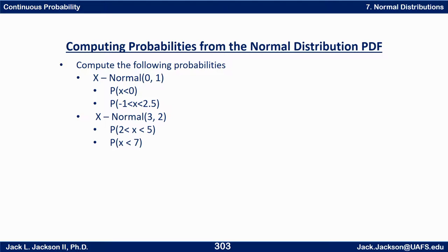What's the probability that X is less than zero? That one you don't need a calculator for. What about the probability that X is between negative 1 and 2.5? And then what about X being normal with mean 3 and standard deviation 2 — what's the probability that X is between 2 and 5, and X is less than 7? Let's look at some of these.